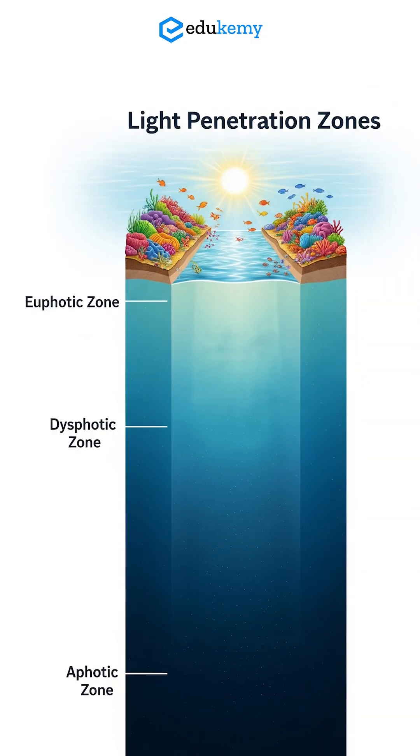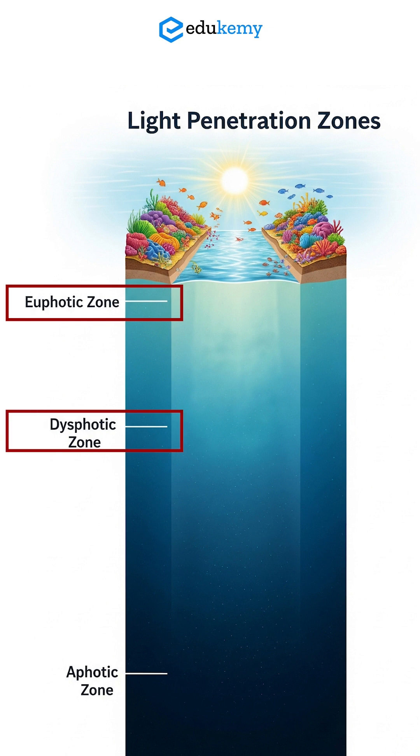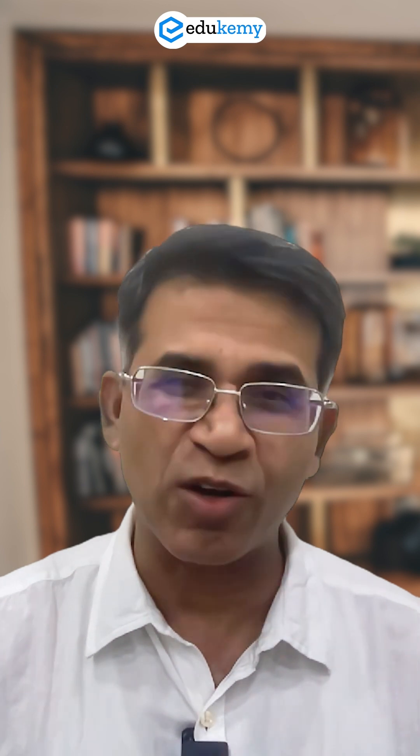The problem is that these kinds of questions can also be enriched very well. Above the abyssal plain, which is at 4,000 meters, the oceans can be organized in different ways. We have layers based on light: the euphotic zone, the dysphotic zone, and the aphotic zone.